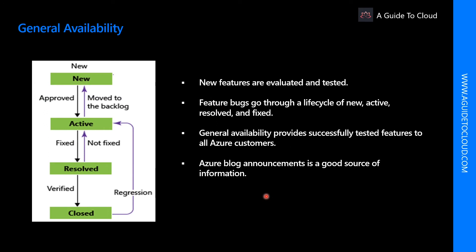Let's understand what general availability is. Once a feature is evaluated and tested successfully, it may be released to customers as part of Azure — in other words, made available for all Azure customers. A feature released to all Azure customers typically goes through a general availability process, or is called GA. This image outlines the general process for features and bugs during the development lifecycle. It's common for features to move from Azure preview to general availability based on customer evaluation and feedback.